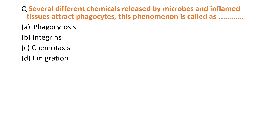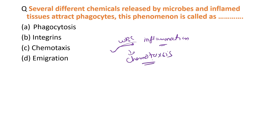The next question: several different chemicals released by microbes and inflamed tissue attract phagocytes — this phenomenon is called what? When a patient has inflammation, WBCs are attracted to the inflammation area. This phenomenon is known as chemotaxis.